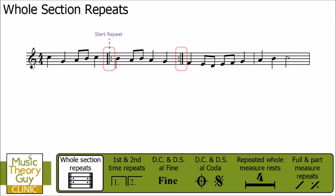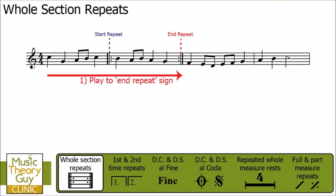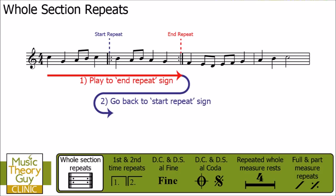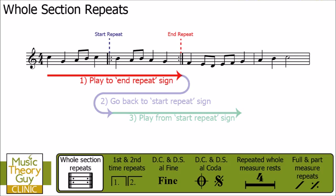This first one is known as the start repeat and this second one is known as the end repeat. What happens now that we've got a start and end repeat sign is that we start at the very beginning and we play to the end repeat sign. At that point we go back to the start repeat sign and then we carry on playing from the start repeat sign. Let's have a listen to this same piece of music again but with those start and end repeat signs in it.